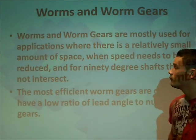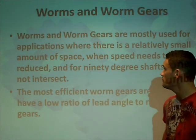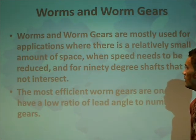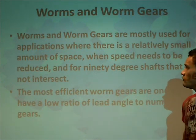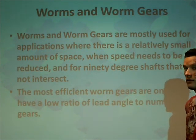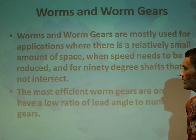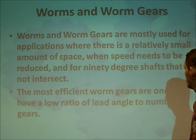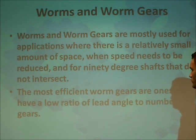Now, worm and worm gears. Worm and worm gears are mostly used for applications where there is not a lot of space, where speed needs to be reduced, and for 90-degree angles between shafts that do not intersect. The most efficient worm gears are the ones that have a low ratio of lead angle to number of gear teeth.